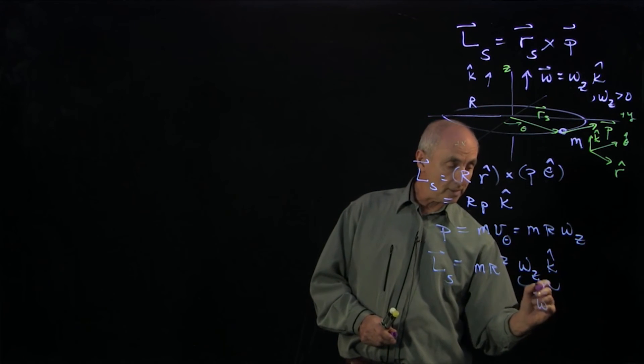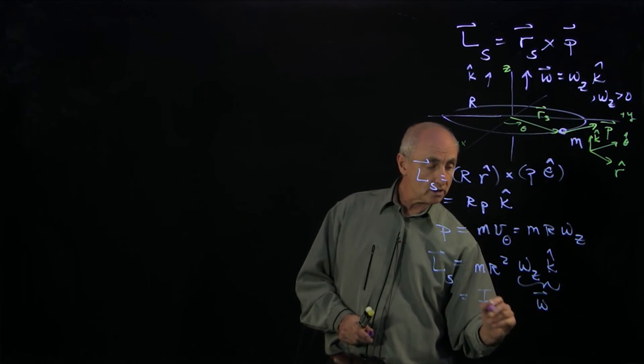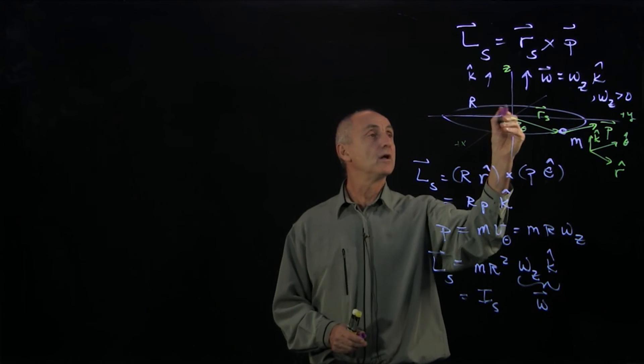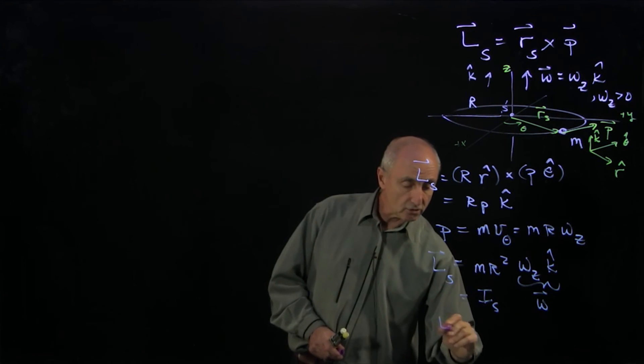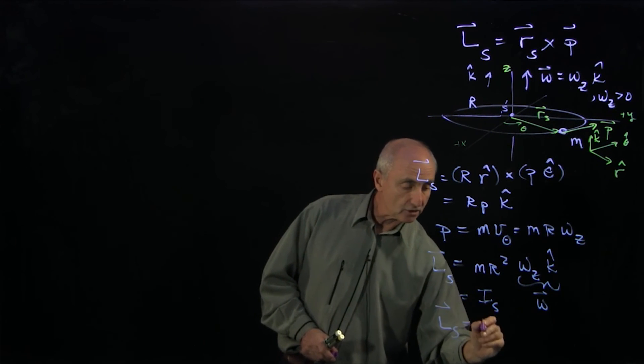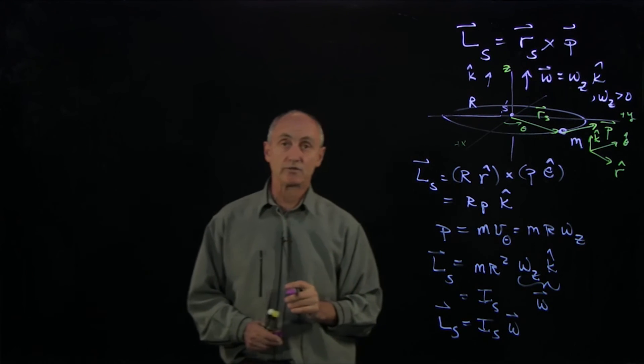This is our vector omega. This turns out to be the moment of inertia of a point particle located at the center. And so we conclude that the angular momentum is proportional to the angular velocity.